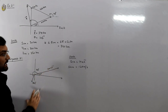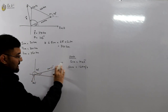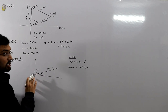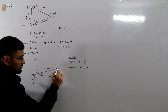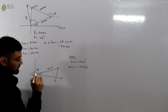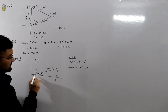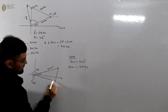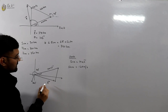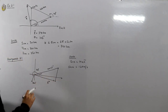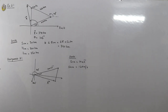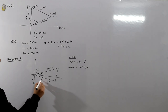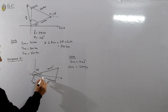To find the resultant velocity we add the two vectors. By the head-to-tail rule, the tail of the second vector is placed on the head of the first. The resultant is drawn from the tail of the first to the head of the last. Measuring the resultant gives approximately 114 meters per second.